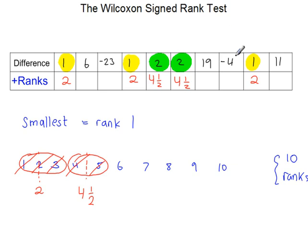The next smallest value is 4. That takes a rank of 6. And then 6, which takes a rank of 7. And then 11, which takes rank 8. And then 19, which takes rank 9. And 23, which takes rank 10. Now you may be wondering why this label here reads positive ranks.